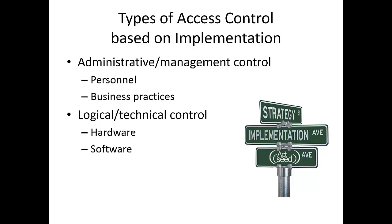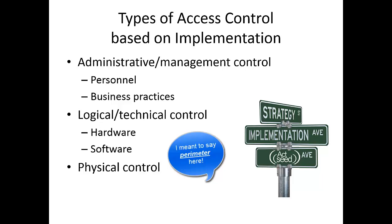Another type based on implementation is logical or technical control, which focuses on technology — both hardware and software. A hardware-based example could be purchasing a new intrusion detection system appliance, while a software-based example could be installing an antivirus program. The last type is physical control, which means improving physical security around the perimeter of the place you're trying to protect.